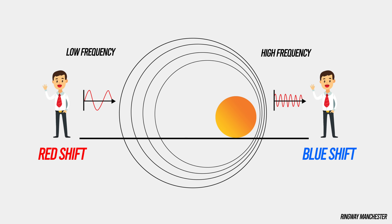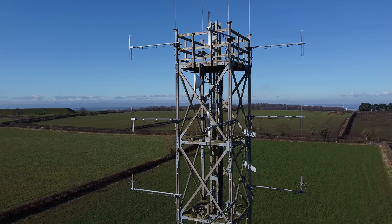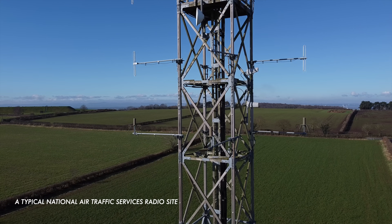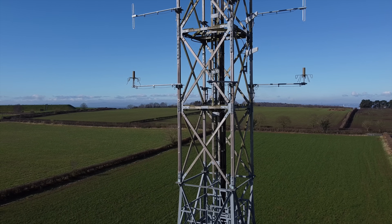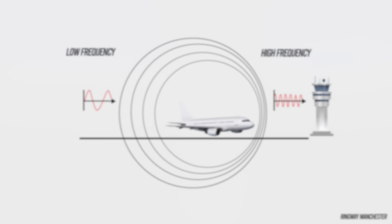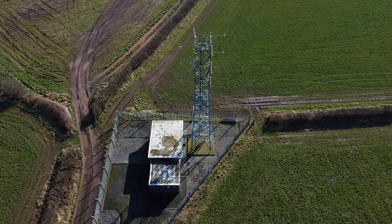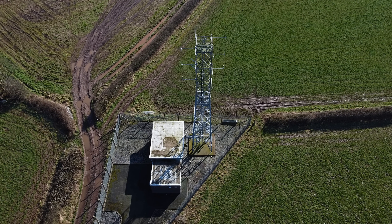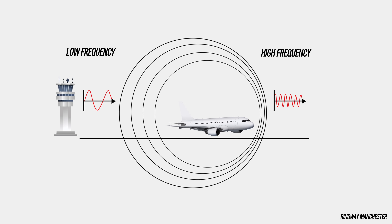This phenomenon is commonly experienced with passing vehicles, especially something like a police car with its siren running, or in astronomy when observing stars and galaxies. In the context of an aircraft transmitting a VHF radio signal to a control tower or ground station, the Doppler shift can be observed. As an aircraft moves towards the control tower, the radio waves it transmits are compressed — and radio waves travel at the speed of light — resulting in an increase in the frequency received by the ground station. Conversely, if the aircraft is moving away, the radio waves are stretched, causing a decrease in received frequency.